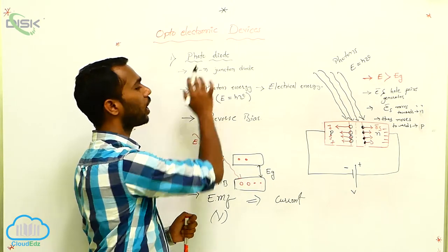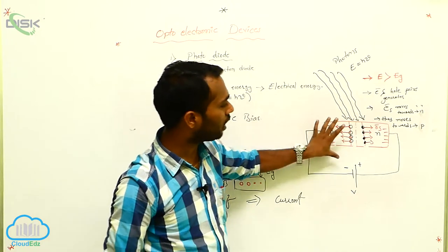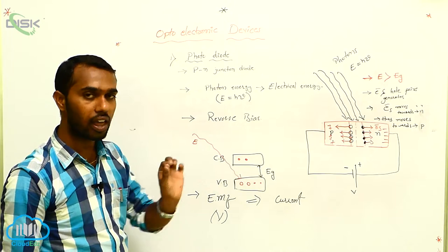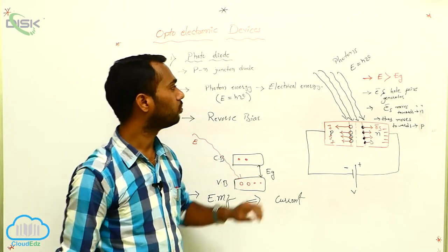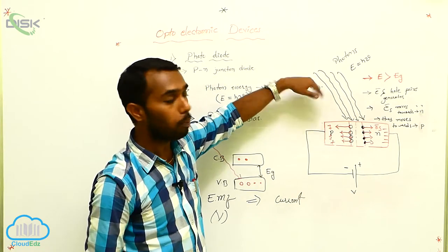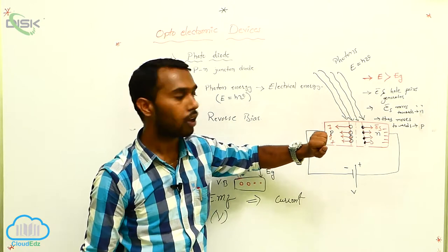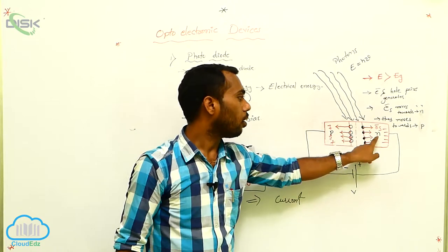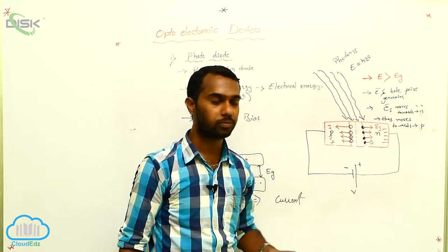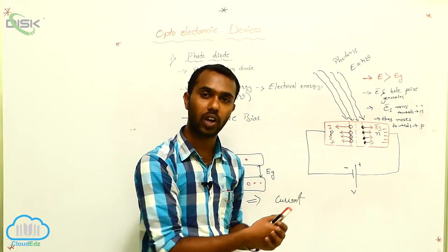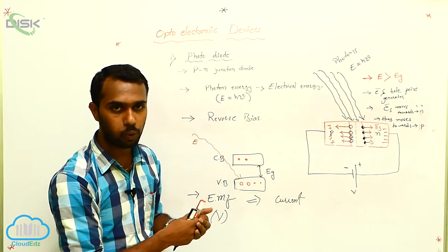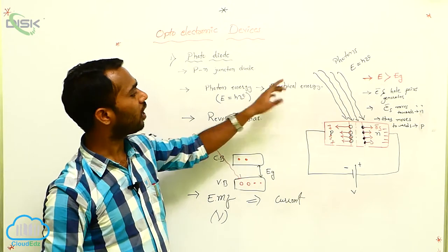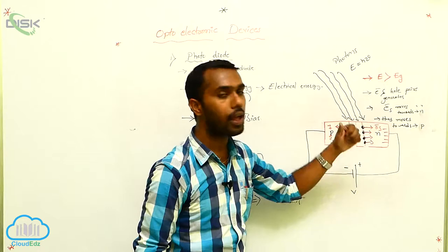This is called a photodiode. Photodiode is nothing but a P-N junction diode that operates in reverse bias. In reverse bias, a small amount of current passes due to minority charge carriers. Whenever photons having sufficient energy — more than the energy gap — fall on the junction, electron and hole pairs are generated. These electrons and holes move towards the N region and P region respectively, increasing charge, resulting in EMF, and current passes. This diode converts photon energy into electrical energy.